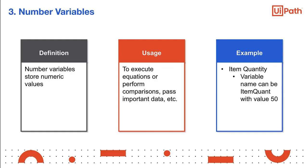Number variables, also known as integers, are the variables in which the user can store numeric values. They are used to execute equations or perform comparisons, pass important data, and so on. Number variables specify values such as the age of a person, for example, 34.